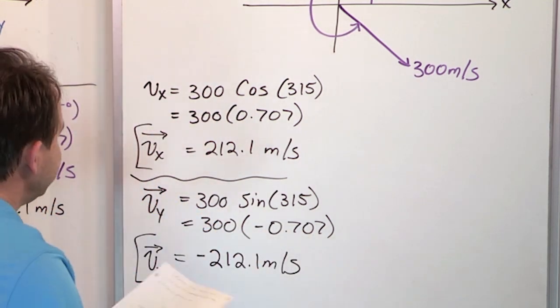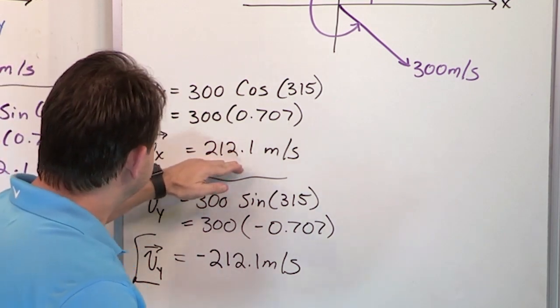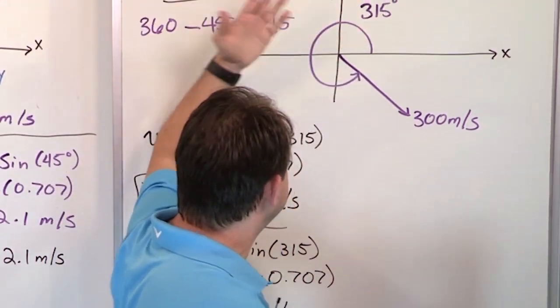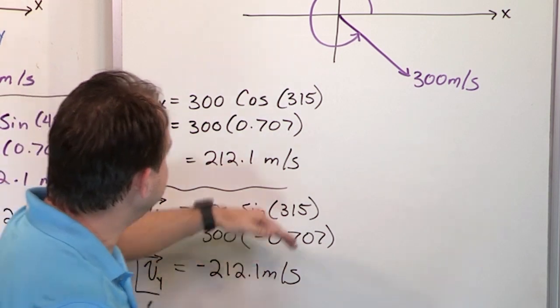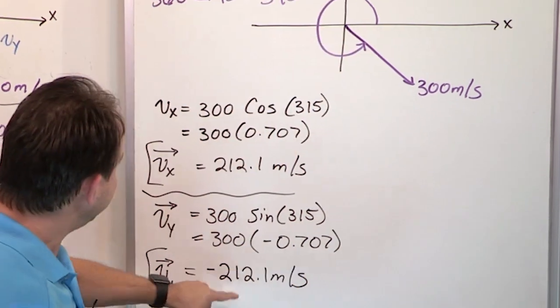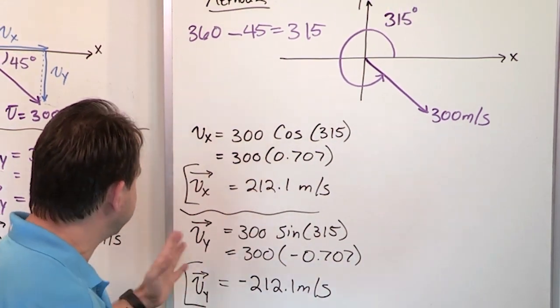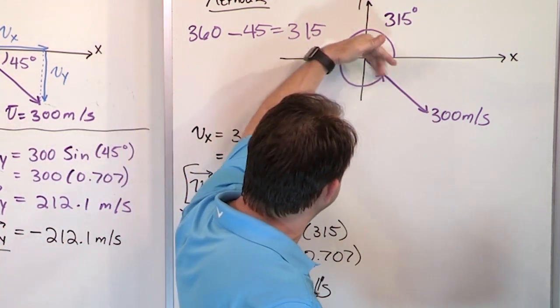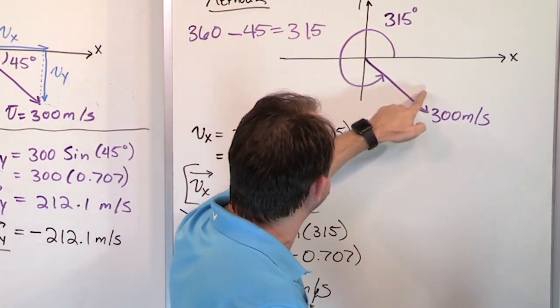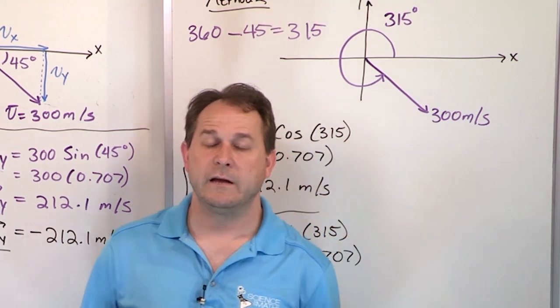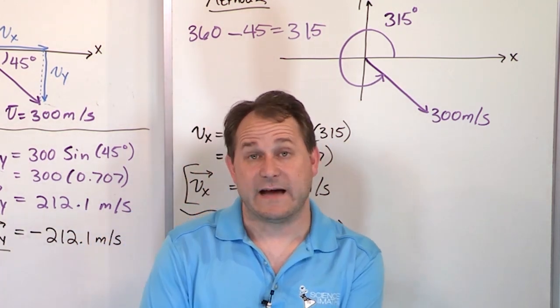And again, even though you think the signs are right, you always check. Is this positive? Does this make sense? Well, it's going that way. Should be positive. This is negative. Does that make sense? Yeah, it's going down. Should be negative. They're equal magnitudes in the components. That makes sense because it was going at 45 degrees. So if I draw a dotted line here and a dotted line here, it should be about the same. It should be exactly the same, actually. And that's it.